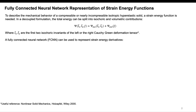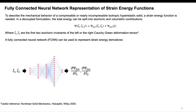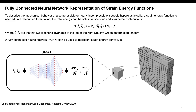Typically, analytical expressions are used for these strain energy functions, and here we propose to use a fully connected neural network to represent the strain energy function and its derivatives. Basically, what we want is a neural network that takes in as inputs the two isochoric invariants I1 and I2, and outputs the derivatives of the isochoric part of the strain energy with respect to the isochoric invariants. Having a neural network that can do this, we have packaged it into a user material subroutine that can then be used in a finite element simulation.